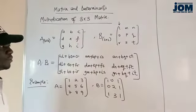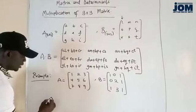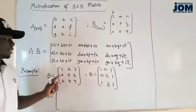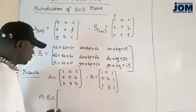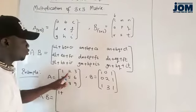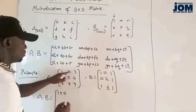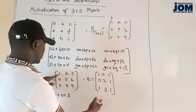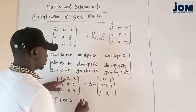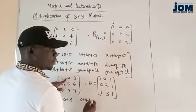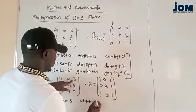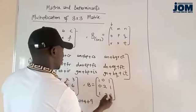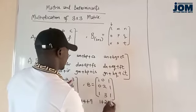We are asked to multiply these two matrices. A multiplied by B: 1 will multiply 1, which is 1, plus 2 will multiply 0, which is 0, plus 3 will multiply 1, which is 3. Then we go to the next column: 1 will multiply 0, which is 0, plus 2 will multiply 2, which is 4, plus 3 will multiply 3, which is 9. Then we go to the third column: 1 will multiply 1 which is 1, plus 2 will multiply 1 which is 2, plus 3 will multiply 1 which is 3.